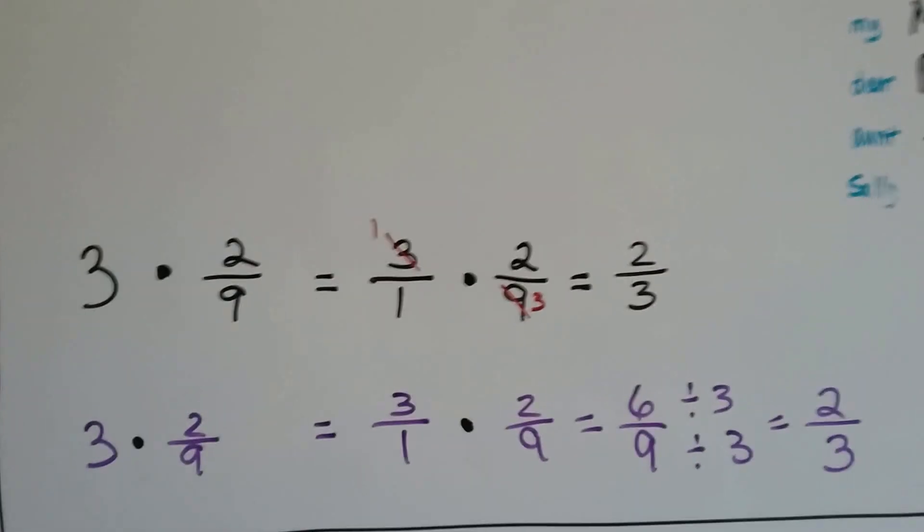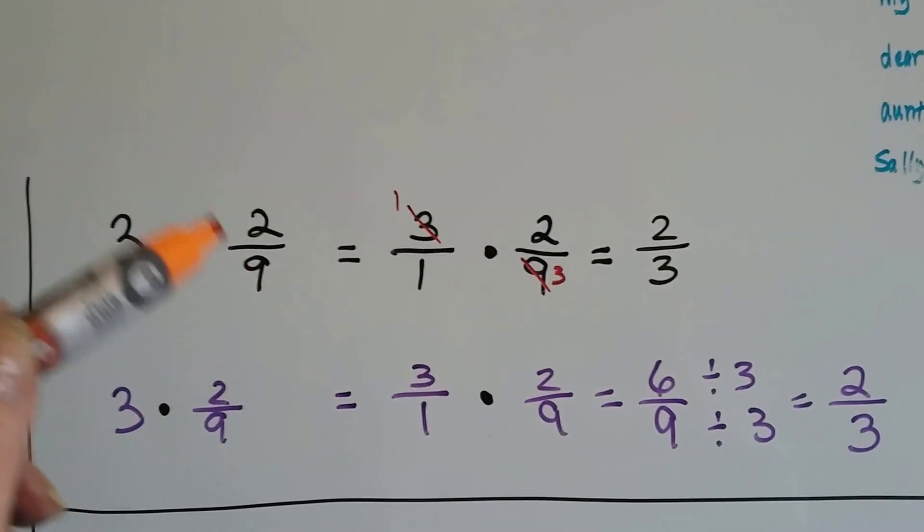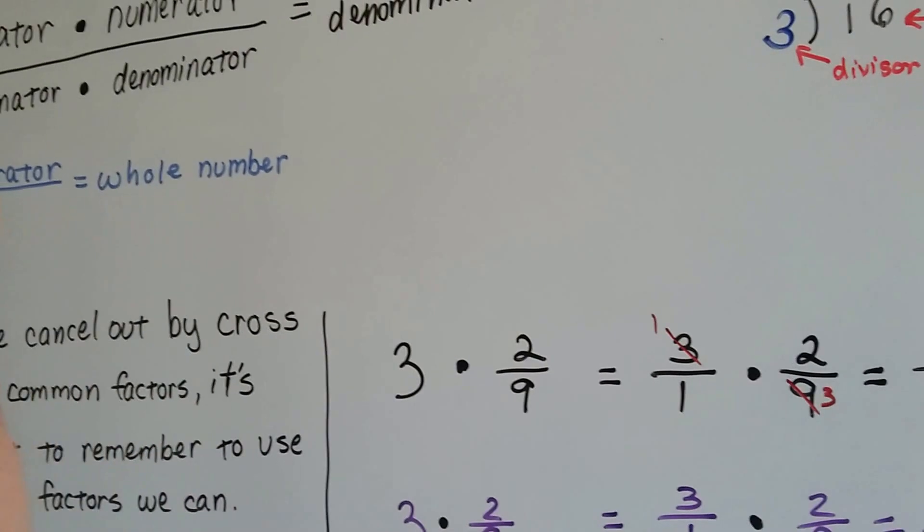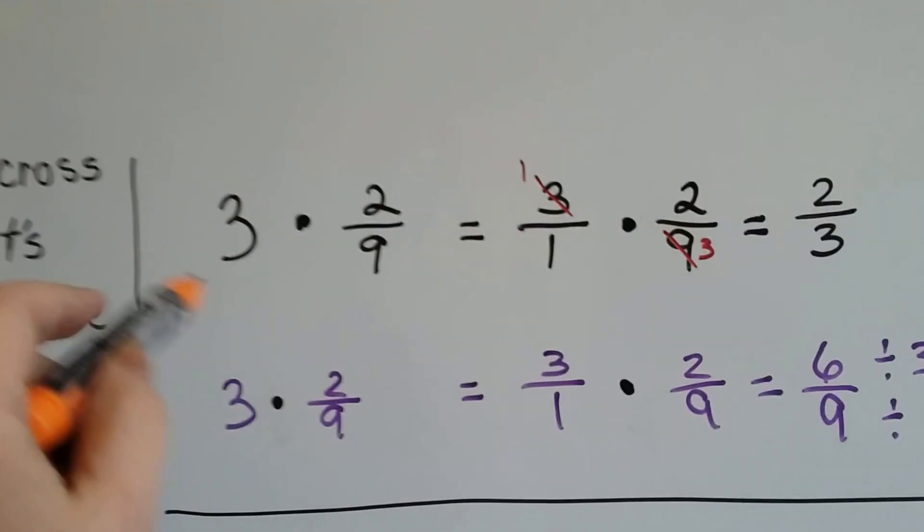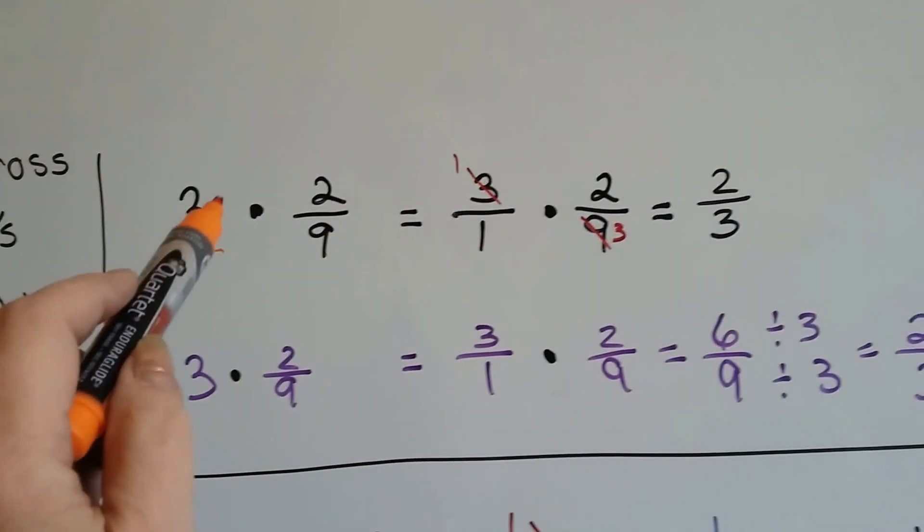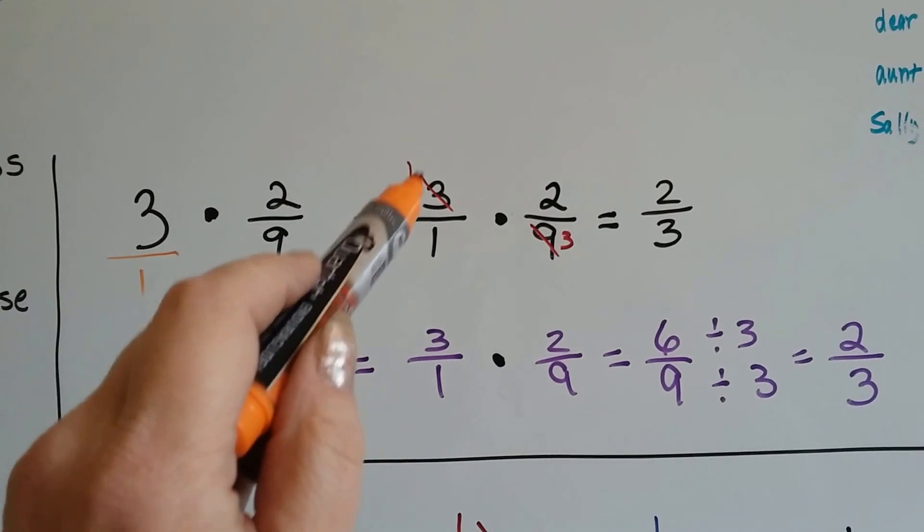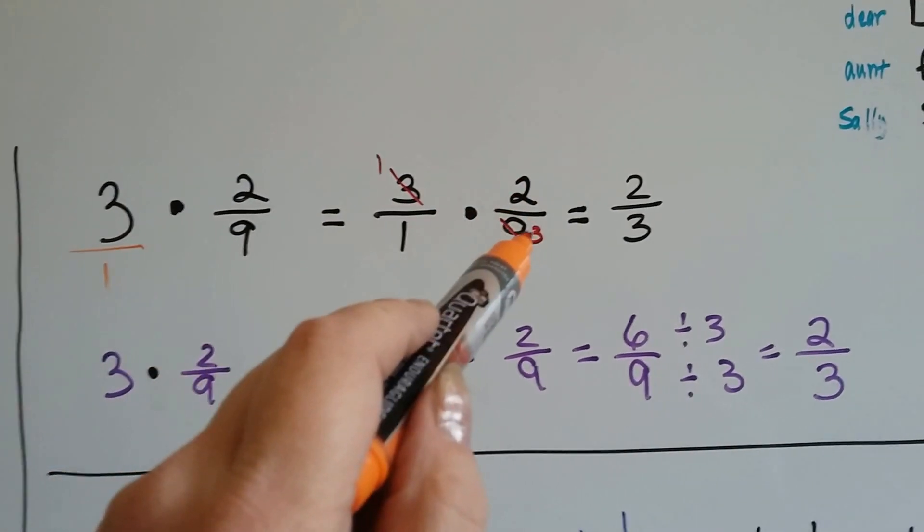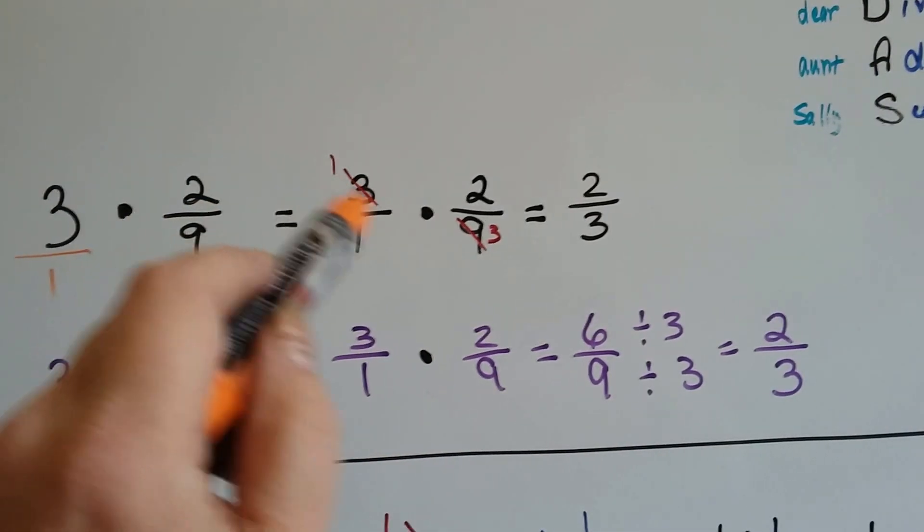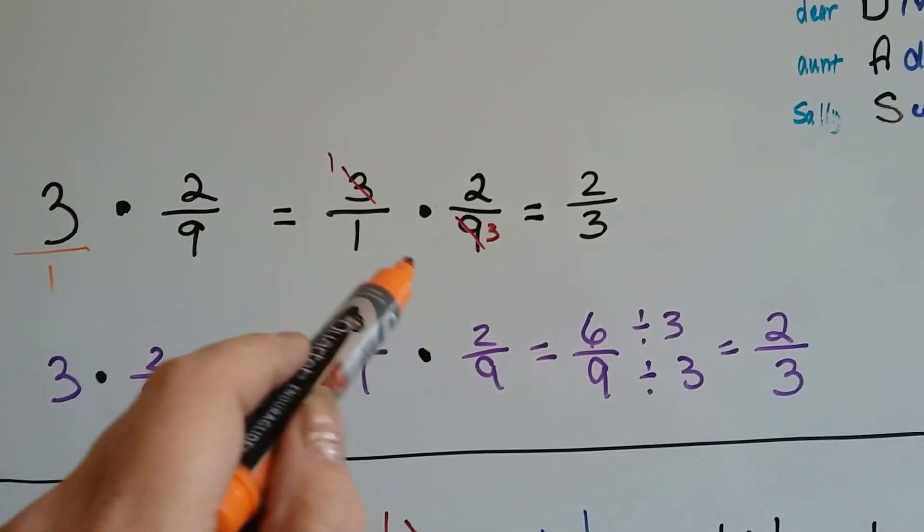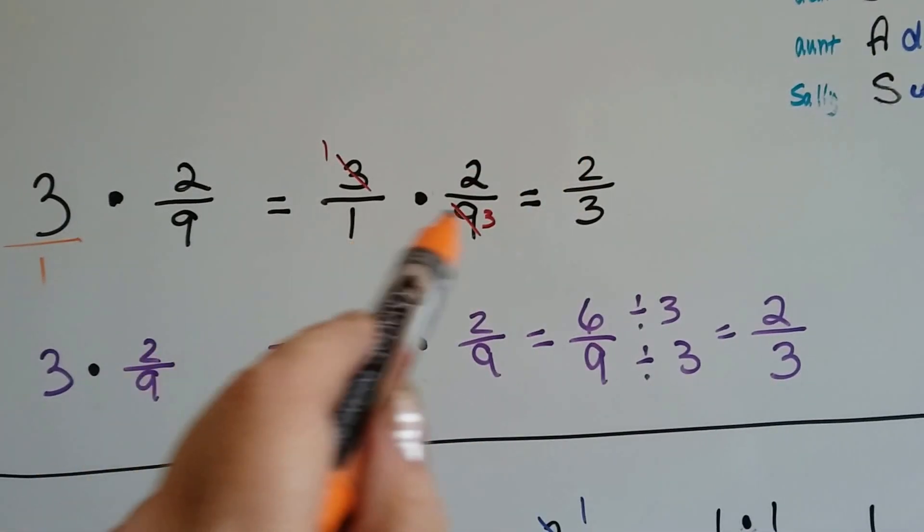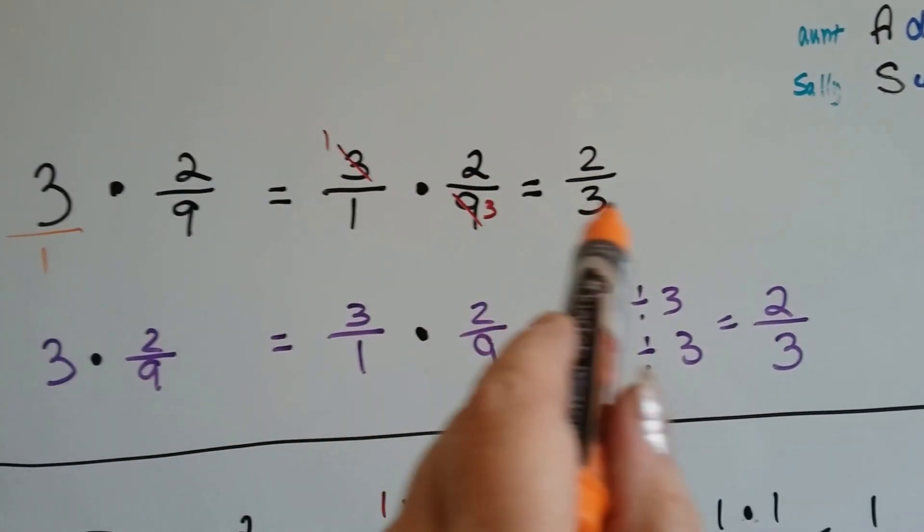This is the old way versus the cross-canceling out way. If we have three times two-ninths, remember I said if the numerator is over one, that's the whole number. So we can turn a three into a fraction by just putting it over one. So three times two-ninths equals three over one times two-ninths. The three goes into the nine three times. And the one and the two are as small as they can get, so now we have one times two over one times three that gives us two-thirds.